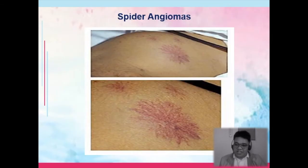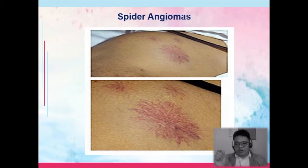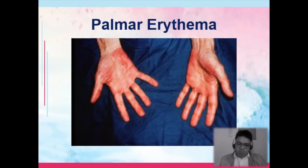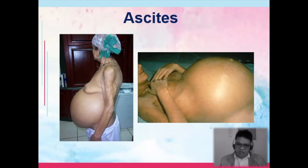Spider angiomas are the dilation of superficial blood vessels related to the increased pressure in the portal vein, which causes blood to pool to the small or dependent blood vessels in other parts of the body. Then you have palmar erythema, and of course, ascites.